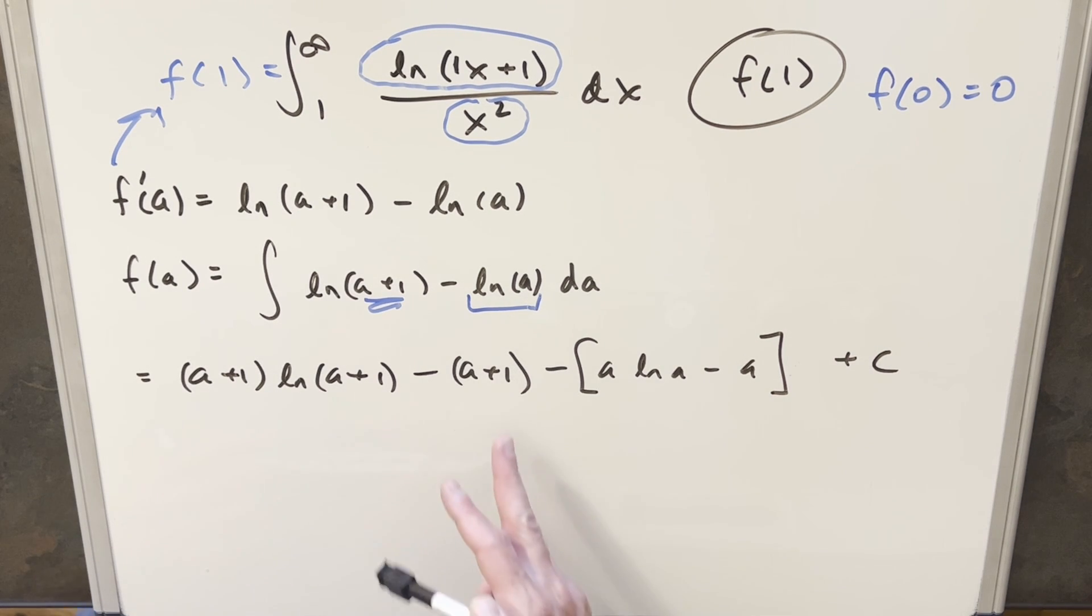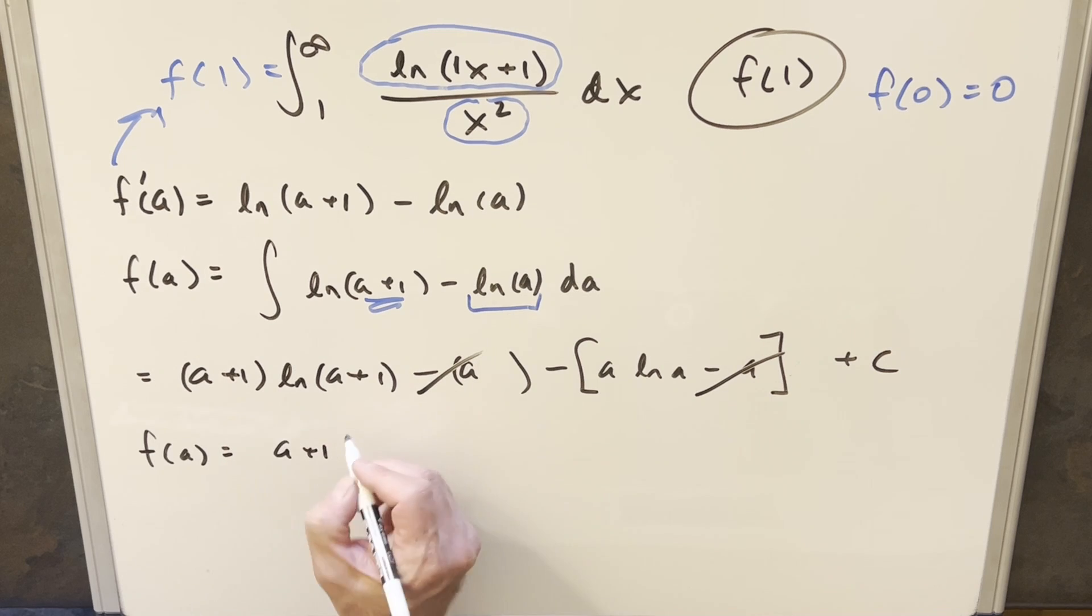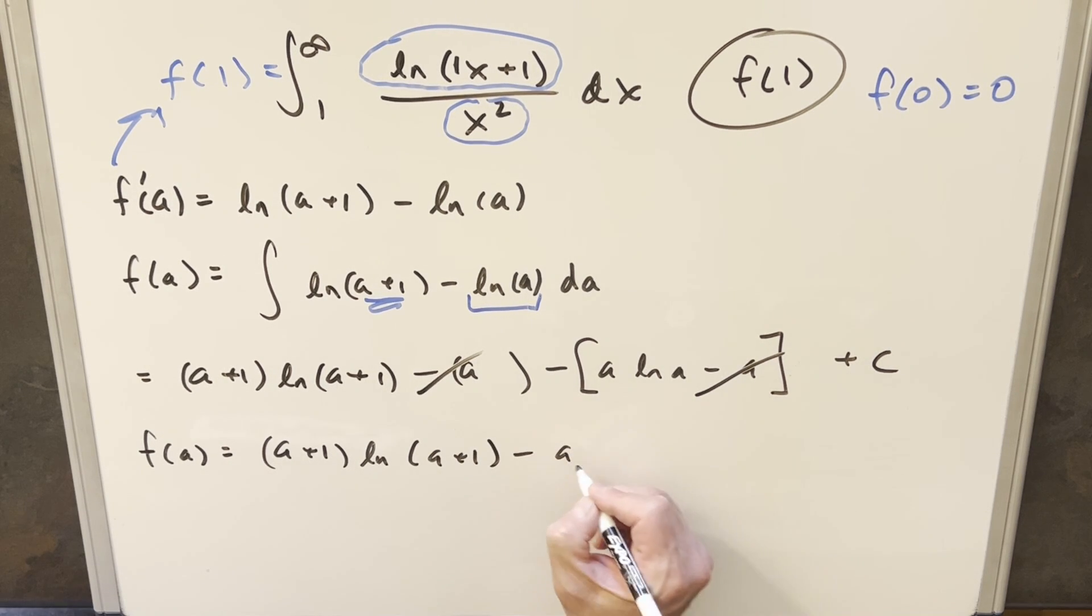Then just cleaning it up a little bit, when you distribute the minus, we're going to have a minus 1. But we have a constant on the end, so the constant is going to just absorb that 1. When we distribute this minus, we've got plus a minus a. That's just 0. So that piece goes away. And so cleaning this all up for our f of a value, we have a plus 1 ln a plus 1 minus a ln a plus c.